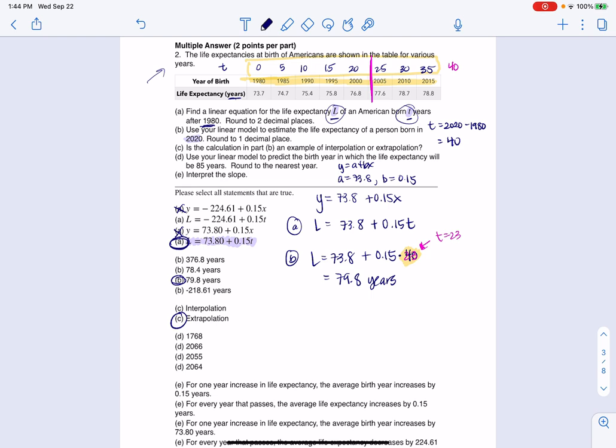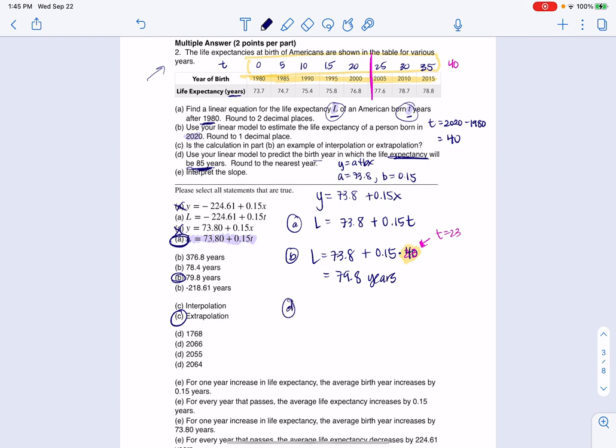And then if we look at part D, it says use your linear model to predict the birth year in which life expectancy will be 85 years. So they want life expectancy at 85. So I'm going to take this linear model here, and I'm going to set L to 85, and then I'll solve for T. So here we go. This is now part D. So I'm going to let this equal 85. It will be equal to my linear model of 73.8 plus 0.15T. And I'm going to subtract 73.8 from both sides. And I like to have my variable on the left-hand side. So I'm going to put the 0.15T here. And when I do 85 minus 73.8, I'm going to get 11.2. So I'll divide both sides by 0.15, and I will get that T is equal to about 74.7.